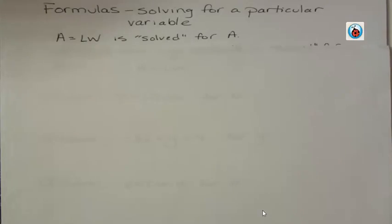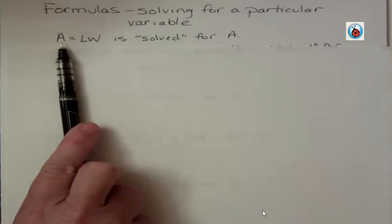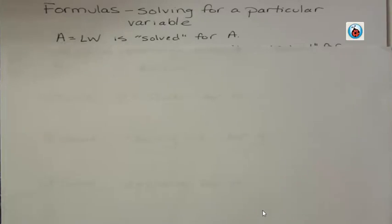If I have A equals L times W, then we know that that's the area of a rectangle formula. And right now it's solved for A because A is the variable that's by itself. So when we say solve for a particular variable, we might want to rearrange that. We could rearrange it so it is solved for L.